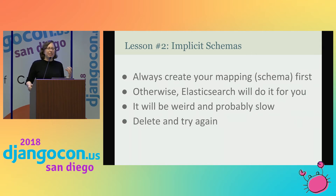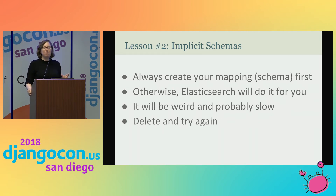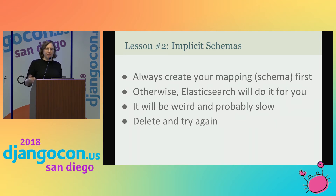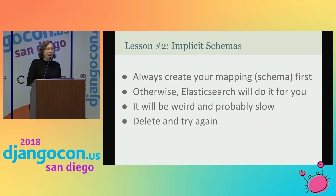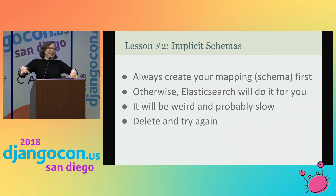The second lesson we learned is that if you don't define a mapping — a schema for your data — Elasticsearch will define one for you, and it might not do the best job. It'll just run away with it, and that will result in your queries malfunctioning. In our case, queries would work but not quite work — they were slower than expected. Our performance in Elasticsearch is near-instant for millions and millions of records, but that one time we forgot to create our own mapping really nailed us. The solution is just delete and try again, because it takes almost no time to import entire data sets into Elasticsearch. If you ever have a problem with Elasticsearch, like 99.9% of the time, this is the problem.